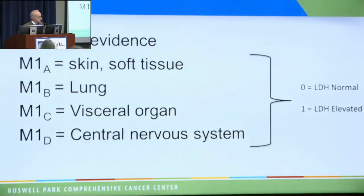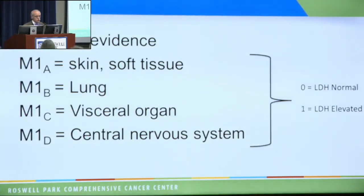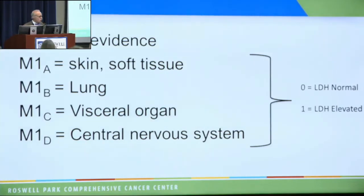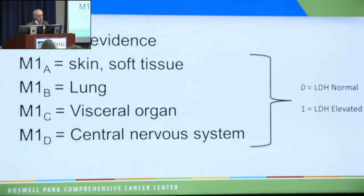The M stage stands for metastases — spread beyond the draining lymph node. There's either no evidence or evidence of cancer, and the location of the cancer changes the prognosis. If it's only in your skin or soft tissue, that's M1. If it's in the lung, M1A. If it's in the lung as well as skin or not, it's M1B. If it hits visceral organs like the liver, it's M1C. If it goes to your central nervous system, it's M1D. We also use a blood test called LDH to differentiate high-risk and lower-risk metastatic disease — LDH is either elevated or not elevated.